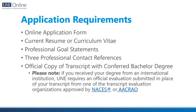The application process consists of completing the online application form, which can be found on the online portal where you will fill in general information. The online portal is also where you will upload any required application materials. We require a current resume or CV, which can be uploaded in supplemental section 4 of your application. You will be asked to answer four professional goal statement prompts — the program looks for one to two paragraphs, about 250 to 350 words per response. You will provide contact information for three professional references, which should be academic or professional references, preferably from a leadership or supervisory role, including their name, email address, phone number, and a brief description of their relationship to you.